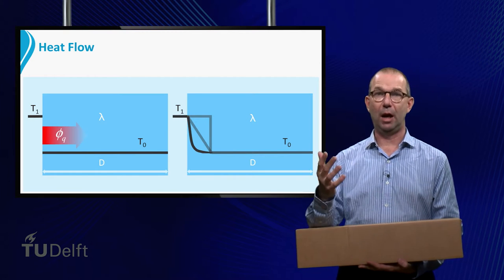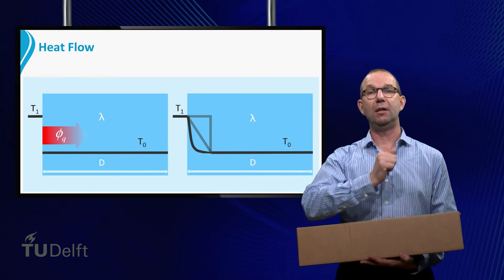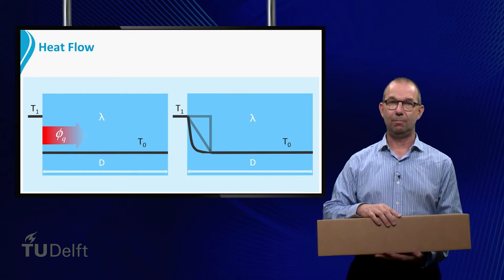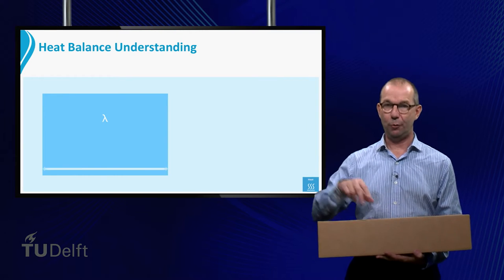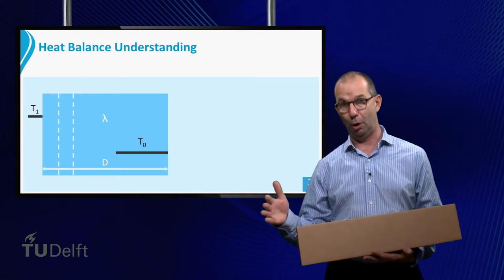It is a curved line that first drops fast, then bends over to gently connect to T0. In order to understand this, we set up a heat balance for a small strip in the plate. The strip is relatively close to the left.